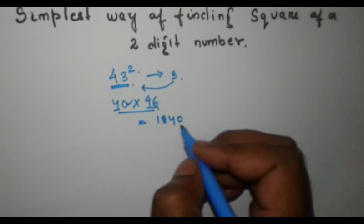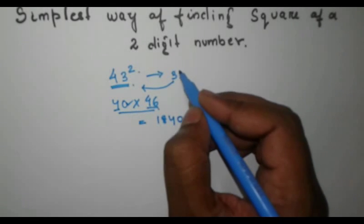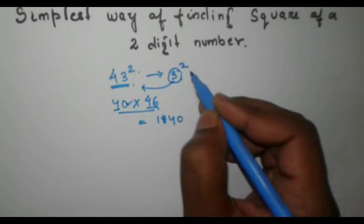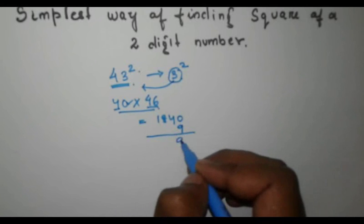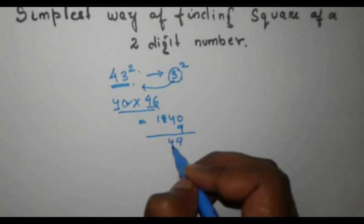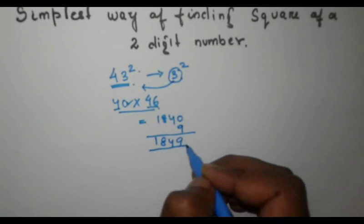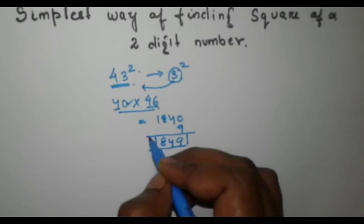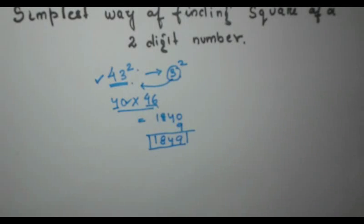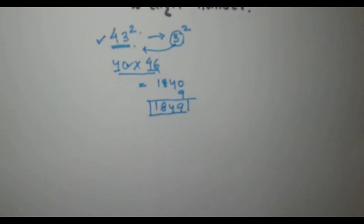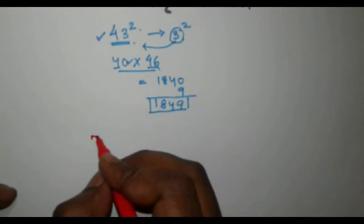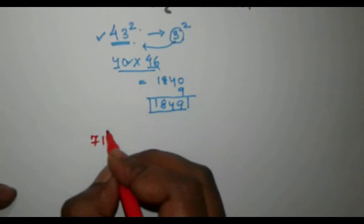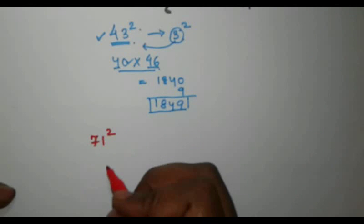The next step is to square the difference, which is 3. We get 9, and we add it to 1840, giving us 1849. That is the square of 43. Now let's take another example: let's find the square of 71.